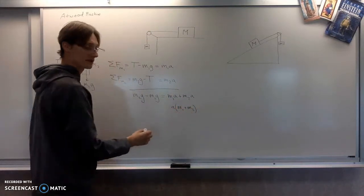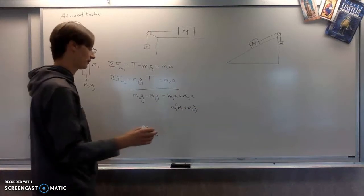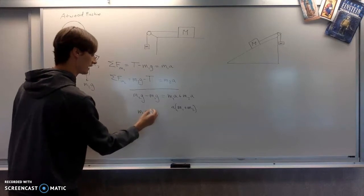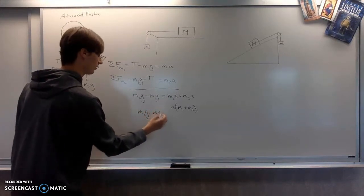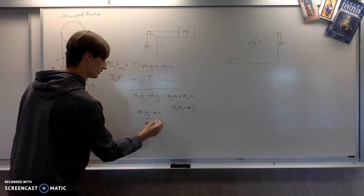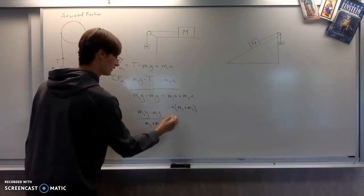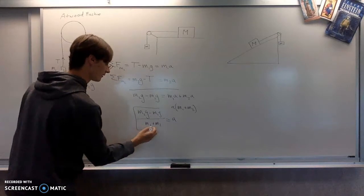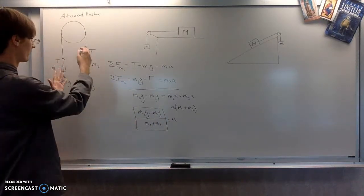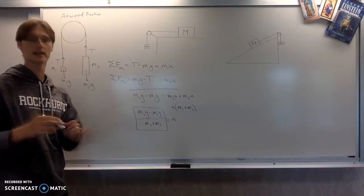And divide both sides by M1 plus M2. And so the final answer would be M2g minus M1g over M1 plus M2 equals acceleration. So that's how any problem where both sides are hanging is going to go.